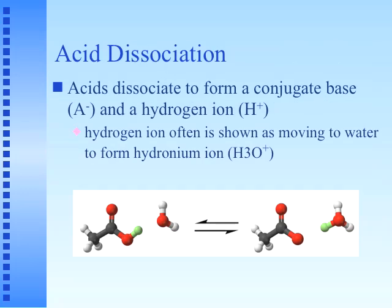Acids dissociate to form a conjugate base A− and the hydrogen ion H+. The hydrogen ion often moves to water to form the hydronium ion H3O+. In the graphic we have acetic acid (ethanoic acid). You should notice the double-bonded oxygen on the carbon and the OH group — the COOH group — making it a carboxylic acid. The hydrogen leaves the carboxylic acid, forming the COO− ion, and the hydronium ion with three hydrogen atoms on the oxygen.